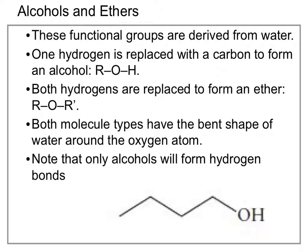The first types of groups we're going to look at are alcohols and ethers. These are compounds that are in some way derived from water. Recall that water has a chemical formula H2O, and if we take a look at the structure of water, we find an oxygen with those two hydrogens coming off either side. In an alcohol, one of these hydrogens will be replaced by what we call an R-group. An R-group just means that that is some sort of carbon-containing structure.